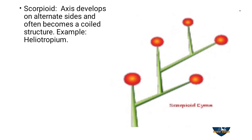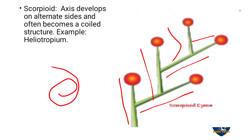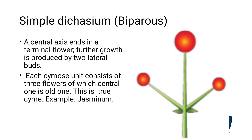Scorpioid cyme. The main axis alternates with each other — this one and here one, this one — like this it is alternating. This alternating arrangement shows a coiling structure that looks like a scorpion's tail. So it is called scorpioid cyme. Example: Heliotropium.